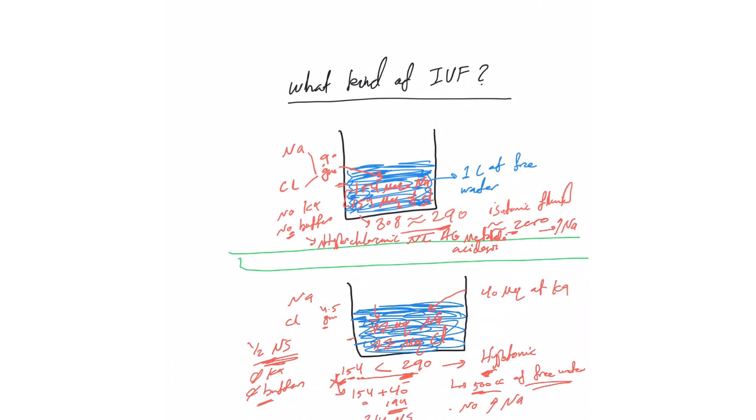See how we play with this? I could create something similar to three-quarters normal saline if I understand the principle. That means the free water in three-quarters normal saline will be around 250 ml in each liter. Simple math. Any osmotically active agent you add will add to this number and decrease the amount of free water. So remember that.